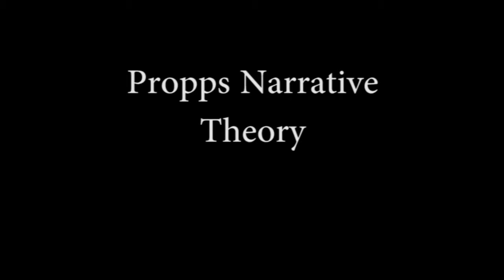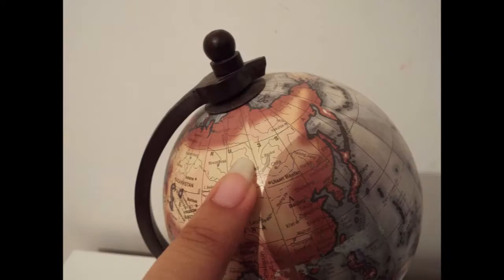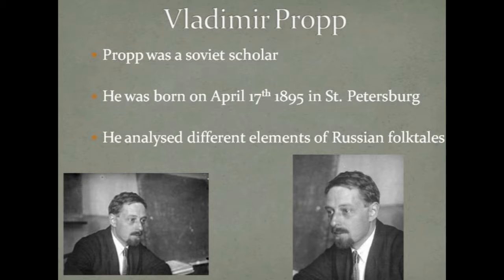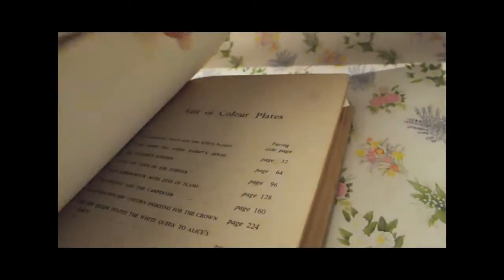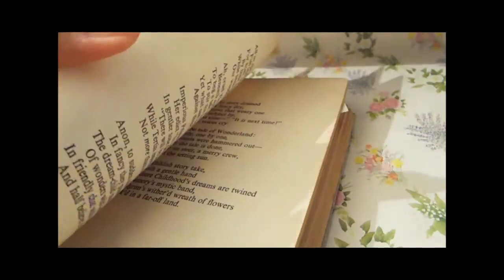Propp's narrative function theory. Vladimir Propp was from Russia. He came up with a theory that certain character types are needed to drive a narrative forward. Propp's character theory suggests that characters of a certain type are essential to drive a narrative. These characters are usually the villain and the hero. He also came up with a list of 8 characters which are essential to a fairy tale plot, but this can also be applied to a modern day genre such as horror.